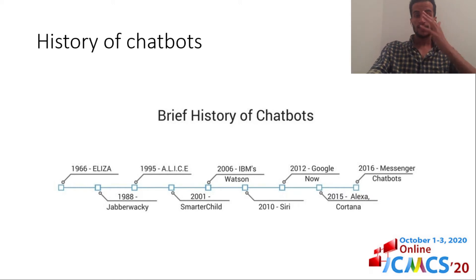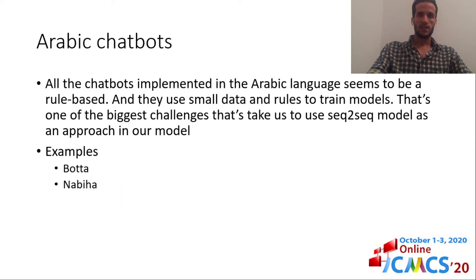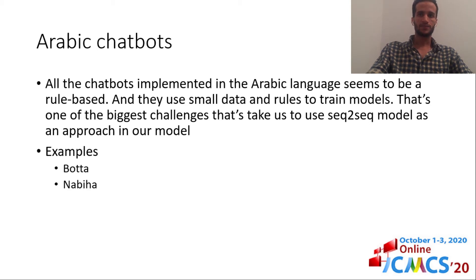Since the Turing test was introduced, many chatbots appeared, including ELIZA, ALICE, and many others. And now we have powerful chatbots like Google, Siri, and Cortana.